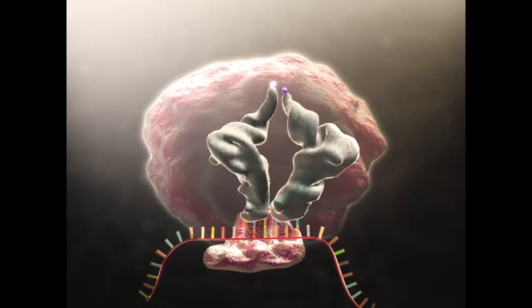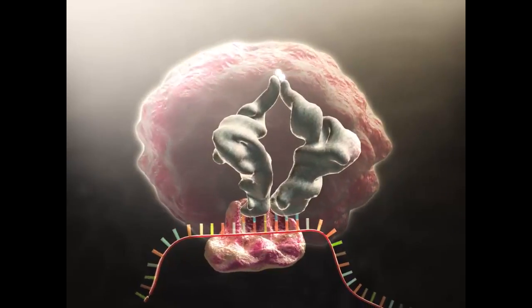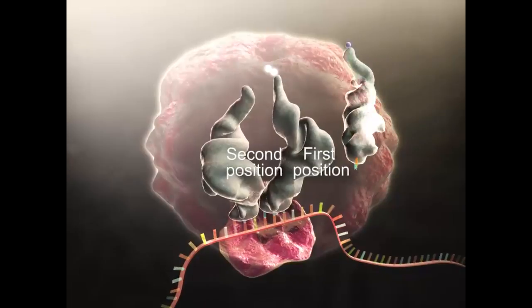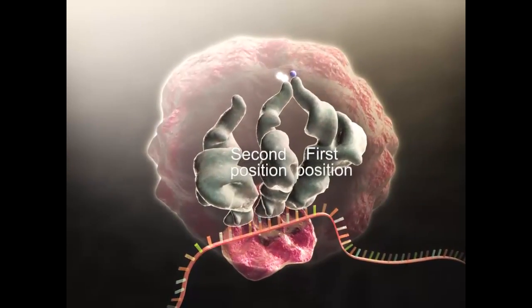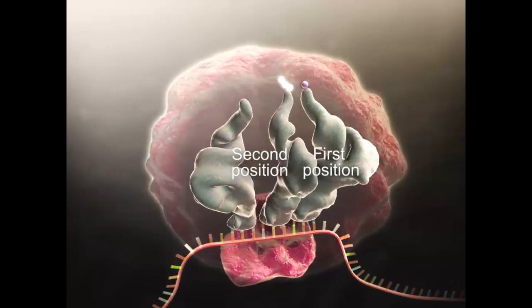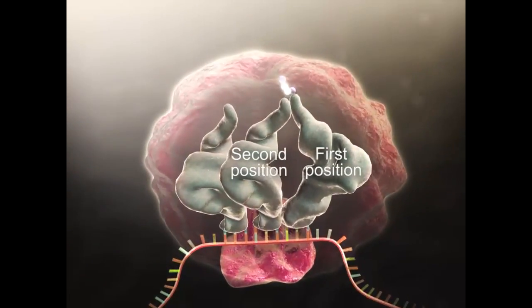When the amino acids of the two tRNA molecules are joined, the tRNA in the first position is released to get a new amino acid. The growing protein is attached to the tRNA in the second position. The mRNA is then pulled through the ribosome so that the tRNA with the protein chain is now in the first position.